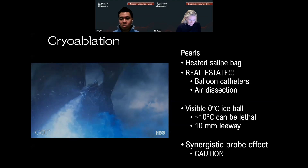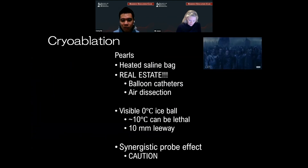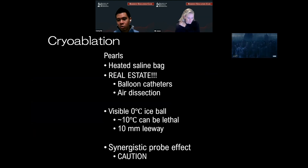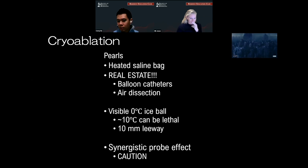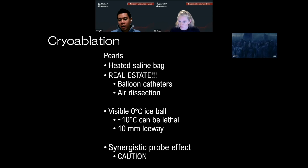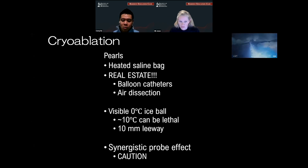I treat the cryoprobes and ice making as the white walkers — and really space is the only thing that can save you. To effectively use this technology: the heated saline bag we talked about, real estate is super important, we talked about air dissection, and you can also use balloon catheters to physically blow up something to create some space. There's a visible zero-degree ice ball, but 10 degrees can be lethal — you want to keep that 10 millimeter leeway. There's also a synergistic probe effect requiring a lot of caution. After the first freeze, the tissue is incredibly cold — if you don't dial it down in the second freeze cycle, ice will form incredibly fast and large. You can technically control the ice delivery anywhere from 5 to 100% at each needle.